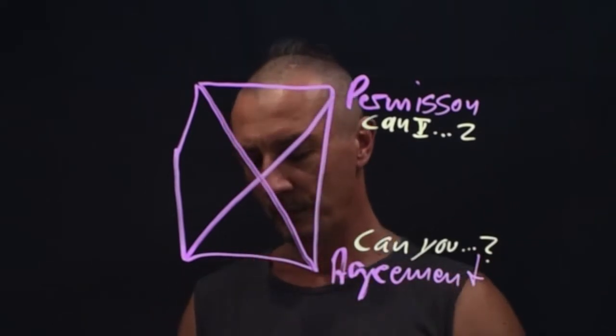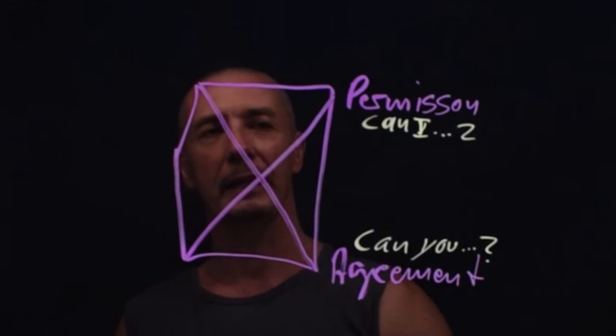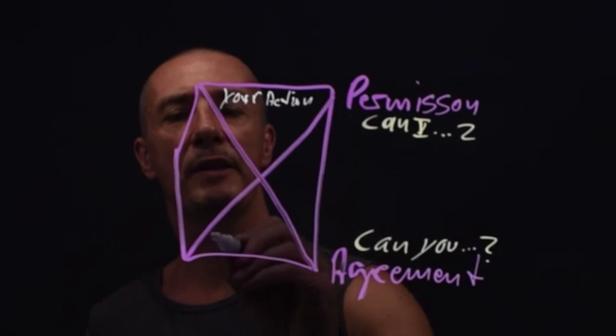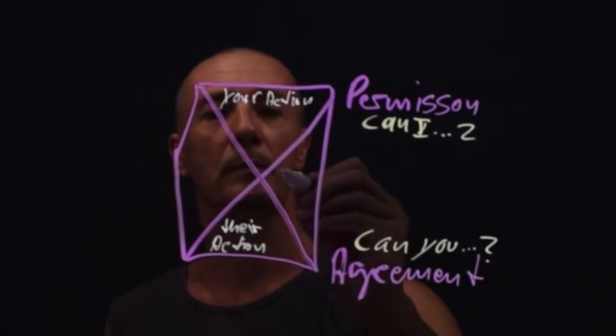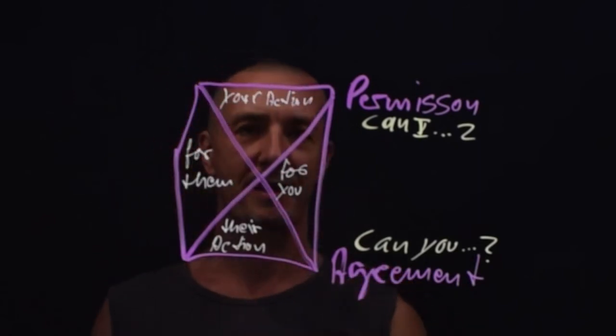And in the agreement line, you ask can you. So now we want to bring the somatic dynamic in here, that is either your action or it's their action. And it's either for you or it is for them. It's either or.